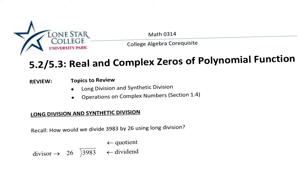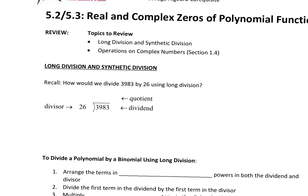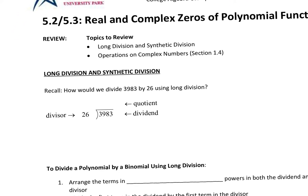Just like in the regular type of division that you know — the long division you know — we use the exact same process. For this particular process, here's what we have. They're asking me: how would I divide 3,983 by 26 using long division?